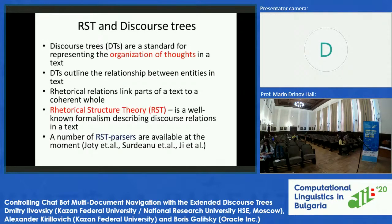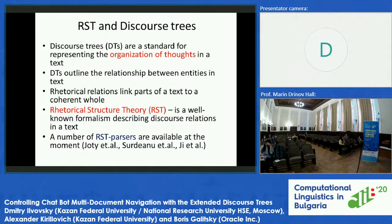First, a short overview of discourse theory and discourse trees. They are a standard way of representing the thoughts of a writer — logical connections between different thoughts expressed in text. Discourse trees are a common formalism nowadays. One of the most popular theories for representing discourse relations is called Rhetorical Structure Theory, or RST. It was founded in the late 1980s by Mann and Thompson, and a number of RST parsers — automated tools for building discourse trees — are available now.